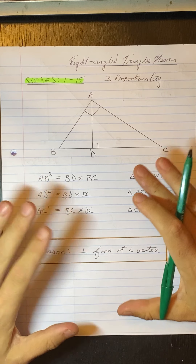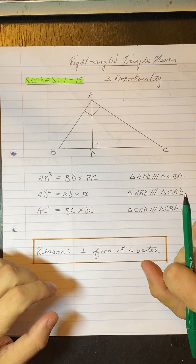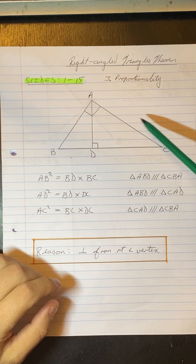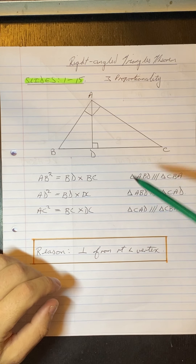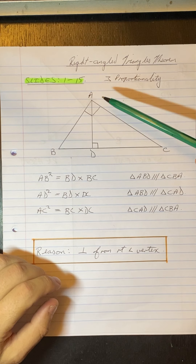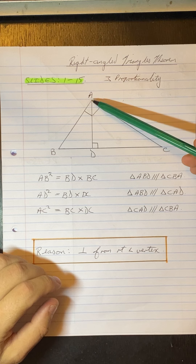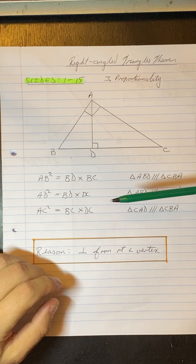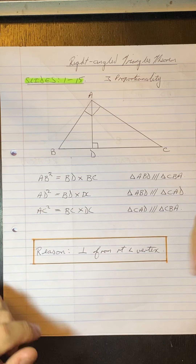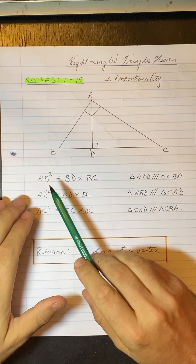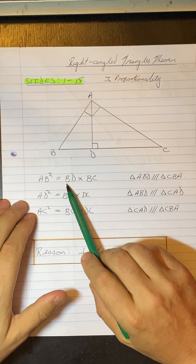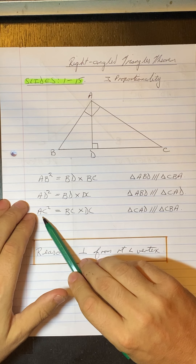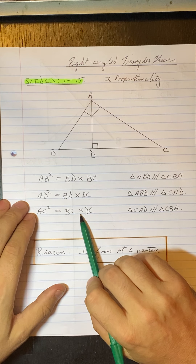What I'm going to show you is how this theorem actually works. You need a right-angled triangle — this ABC, the big one. Then you need a line from the vertex of that right angle, perpendicular down to the third side. From that, we get: AB squared equals BD times BC, AD squared equals BD times DC, and AC squared equals BC times DC.